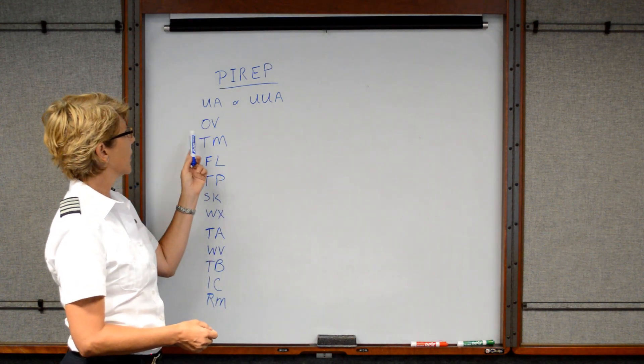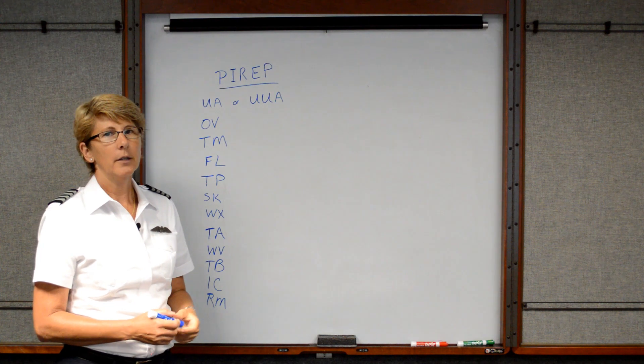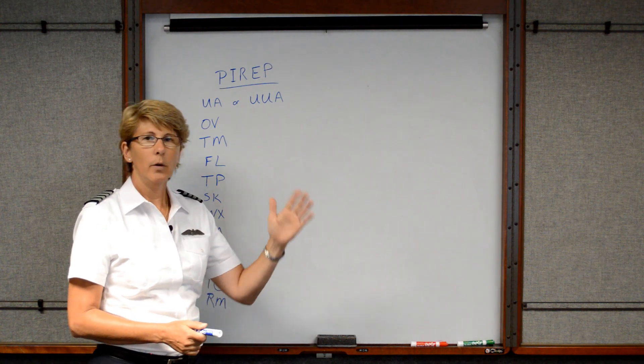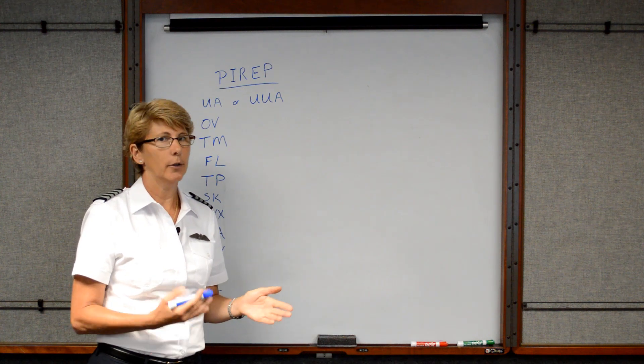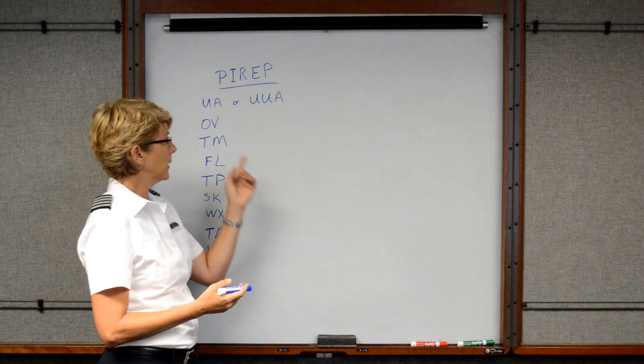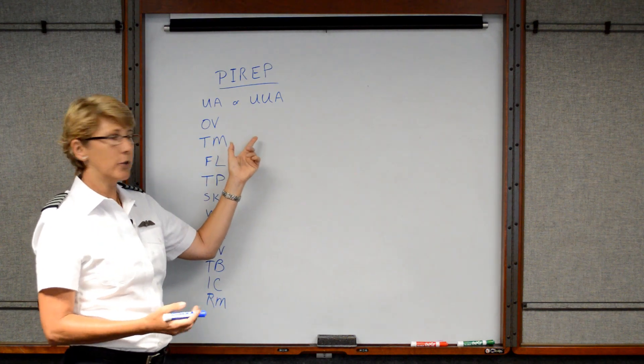The next is OV, which means basically your position. What are you over? So maybe you reported that you were 20 miles south of the Greenwood VOR at 4,500 feet. Basically it's going to report the position.